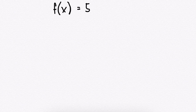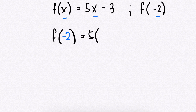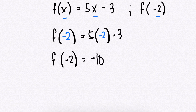Let's have another example. We have the same function f(x) = 5x − 3. You're going to evaluate f(−2). Same process — replace every x in the equation with −2. So you have f(−2) = 5 × (−2) − 3. f(−2) = −10 − 3. So you have f(−2) = −13.